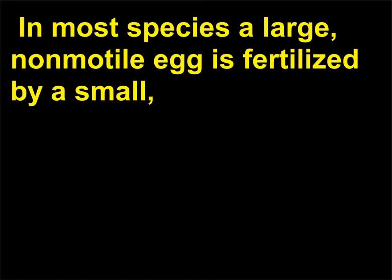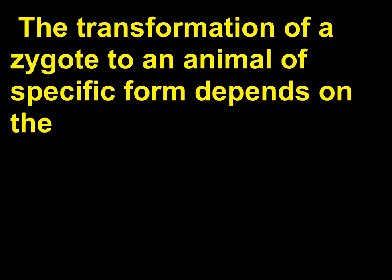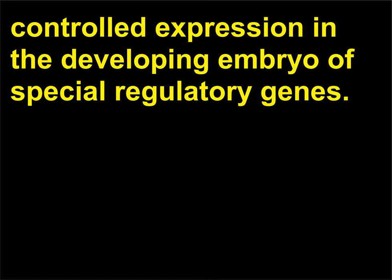In most species, a large, non-motile egg is fertilized by a small flagellated sperm, thus forming a diploid zygote. The transformation of a zygote to an animal of specific form depends on the controlled expression in the developing embryo of special regulatory genes.